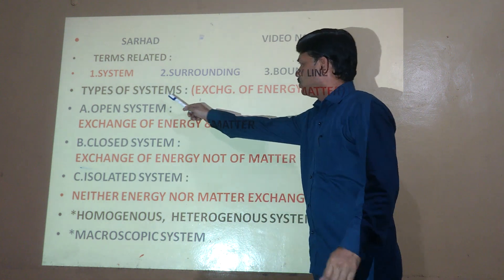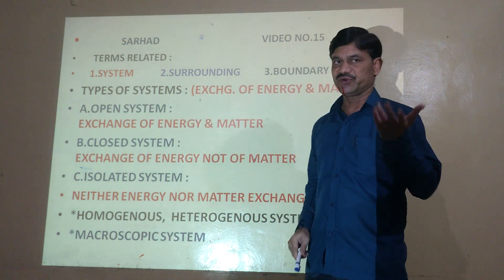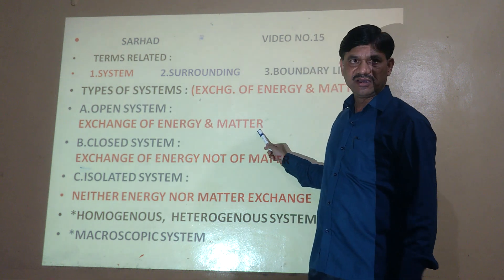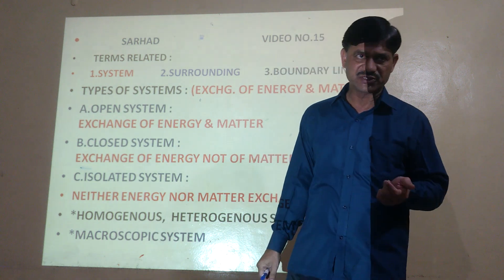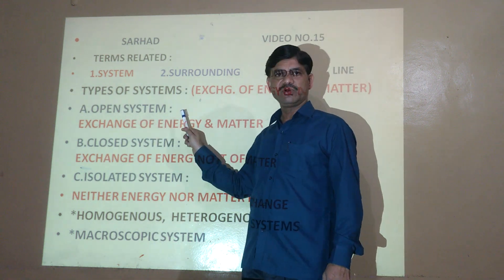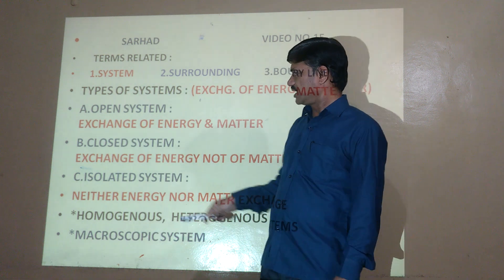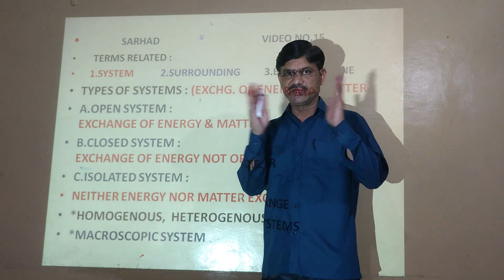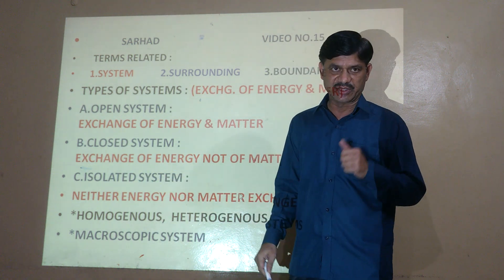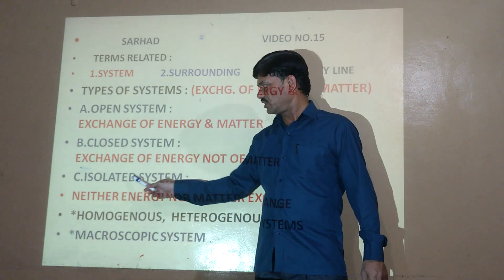Depending upon the exchange of energy and matter, there are three types of systems. An open system is one in which there is exchange of both energy and matter — for example, a hot liquid in an open container. A closed system allows exchange of only energy, with no exchange of matter — for example, hot liquid in a closed container. An isolated system is one where there is neither exchange of energy nor of matter.